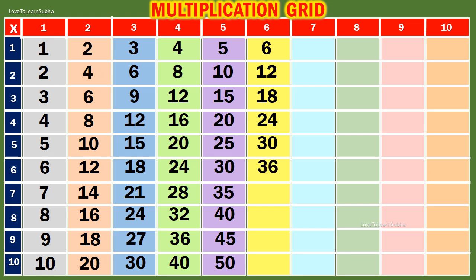6 6s are 36. 6 7s are 42. 6 8s are 48. 6 9s are 54. 6 10s are 60.